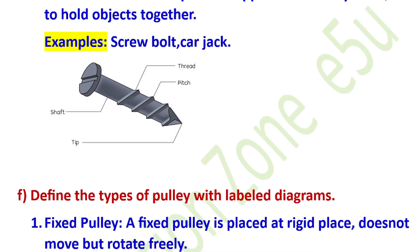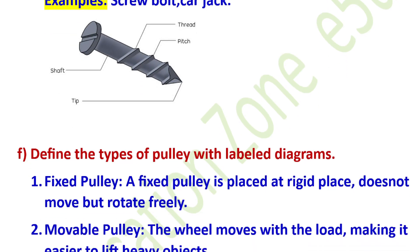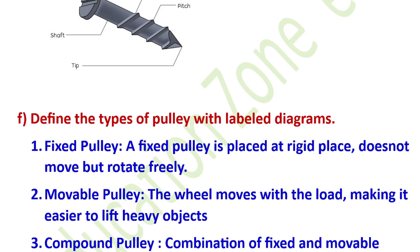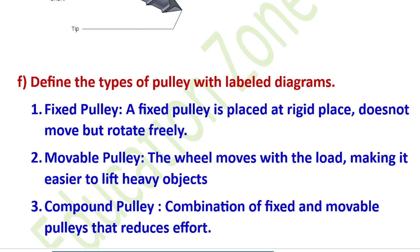Define the types of pulley with a labeled diagram. There are three types of pulley: fixed pulley, movable pulley, and compound pulley. A fixed pulley is placed at a rigid place — it does not move but rotates freely.